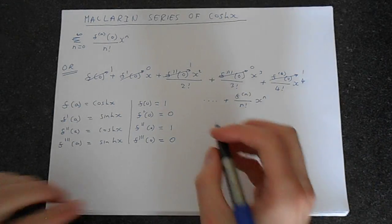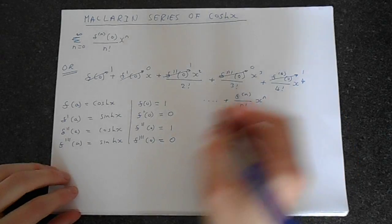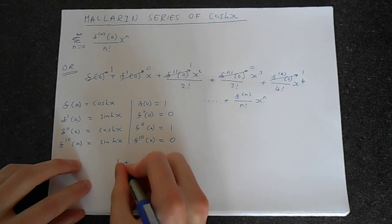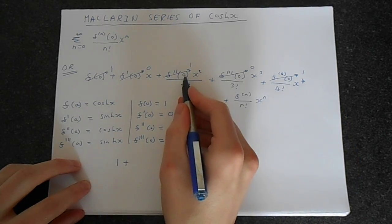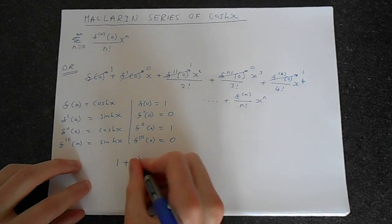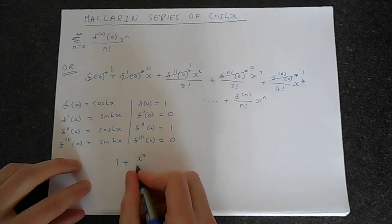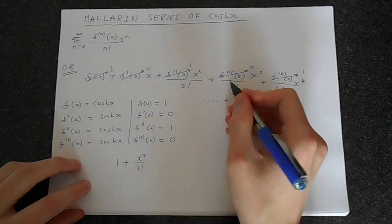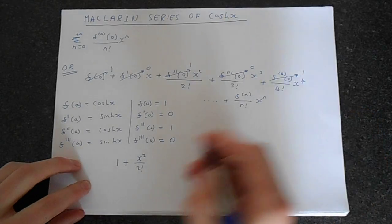So what are we left with? This series here is just going to become 1 plus, well, this is gone, so jump to here. So we've got x squared, so 1 times x squared over 2 factorial. This whole thing's 0, so we're left with x to the 4th over 4 factorial.